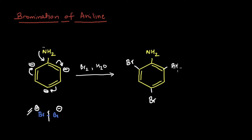The product is 2,4,6-tribromoaniline. This reaction proceeded as expected, and the bromine got added to both of the ortho and the para positions.